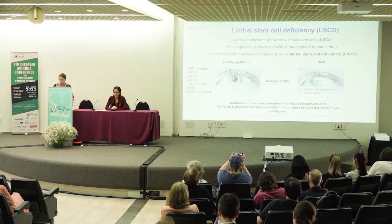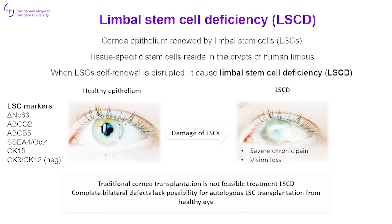Our research interest for several years has been limbal stem cell deficiency. Limbal stem cells are these tissue-specific cells which are located in the cornea. And if there is some high dysfunction with these cells, it can cause limbal stem cell deficiency and in the end it can cause corneal blindness. Traditional organ transplant approaches can be used for treating limbal stem cell deficiency, but for those patients who are suffering from bilateral cases, limbal stem cell transplantation is not feasible from the healthy eye. That's why we got interested in this disease.